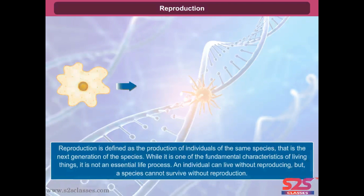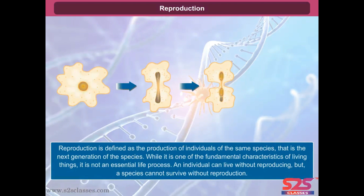Reproduction is defined as the production of individuals of the same species, that is the next generation of the species. While it is one of the fundamental characteristics of living things, it is not an essential life process. An individual can live without reproducing, but a species cannot survive without reproduction.